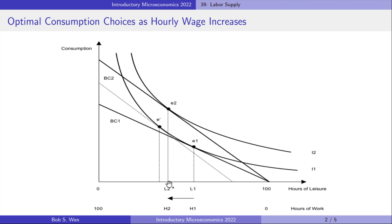Therefore, the hours of work rise from H1 to H2. In this example, the increase in hourly wage leads to a decrease in hours of leisure and an increase in labor supply.